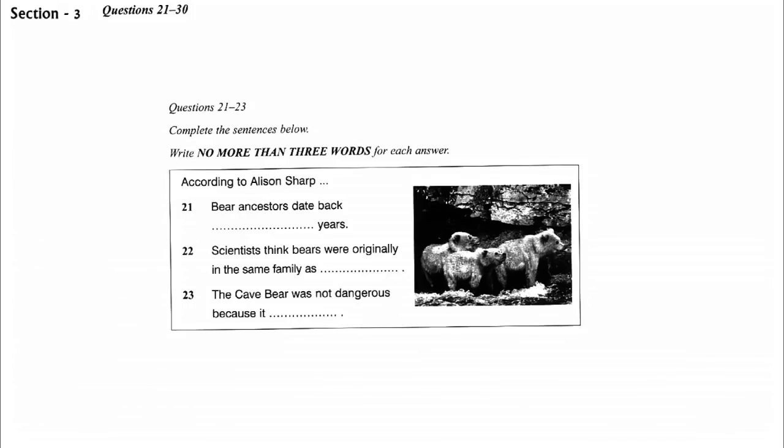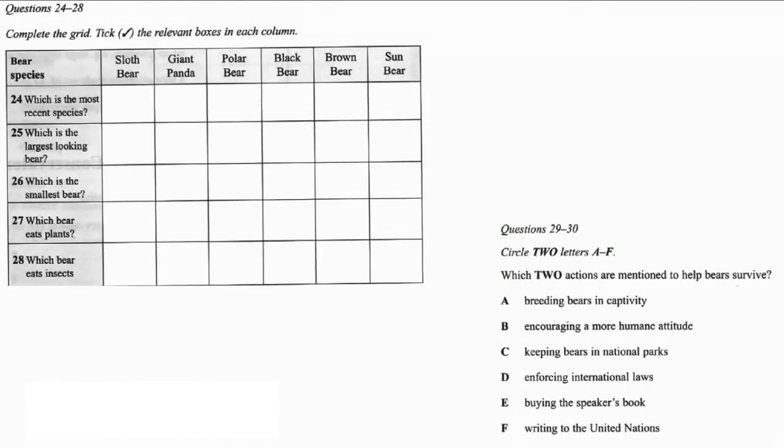In the second part of the interview, Alison talks more about the situation of bears today. Look at questions 24 to 30 first. Listen carefully and answer questions 24 to 30. So, how many bears can we find today? And are any of them in danger of extinction? Well, I'll answer your first question first. There are eight species of bear in all, among them the American black bear and the brown bear, from which evolved the newest species of bear, the polar bear.